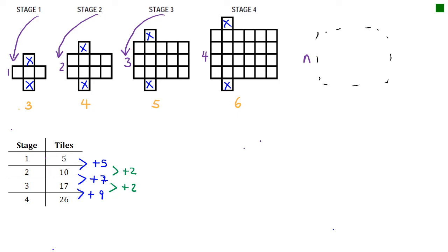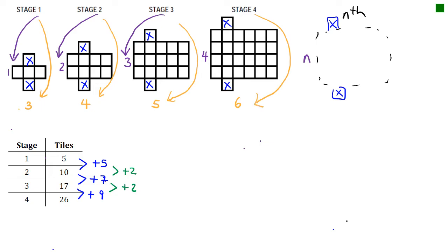So I'll write in my nth shape, which will also have a tile at the top and the bottom. Now let's see what the bottom is. Stage 1 had 3 on the bottom, stage 2 had 4, stage 3 had 5, and stage 4 had 6. Each one is 2 more than the stage number, so the nth one will be N plus 2.